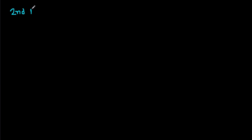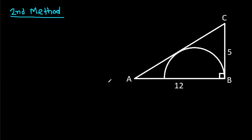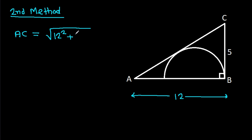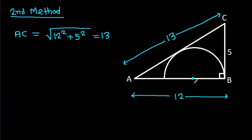For the second method, we have AB is 12 and AC is 13. Suppose the center of the semicircle is O, then OB will be R, and AO will be 12 minus R. Suppose this point is D, then OD will be R, and again this angle will be 90 degrees.